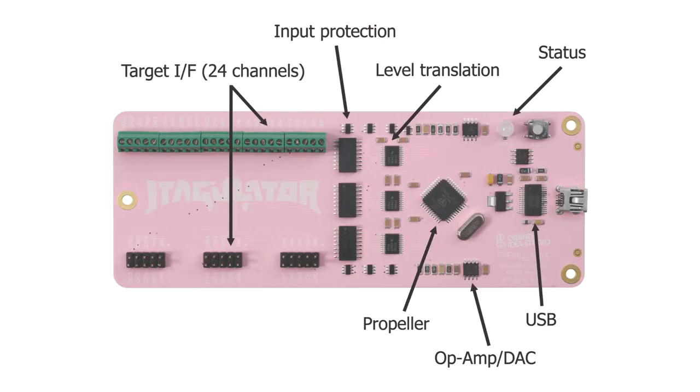Another possibility to more easily identify the pinout of the UART interface is to use a tool like JTAGulator. JTAGulator is open-source hardware that uses scanning logic to automatically identify the pinout of the UART or the JTAG interface. It has 24 programmable IO pins that can be attached to JTAG or UART pin candidates and it runs automatic scanning logic to identify the pinout of the interface. It is also able to identify the speed of the serial interface.